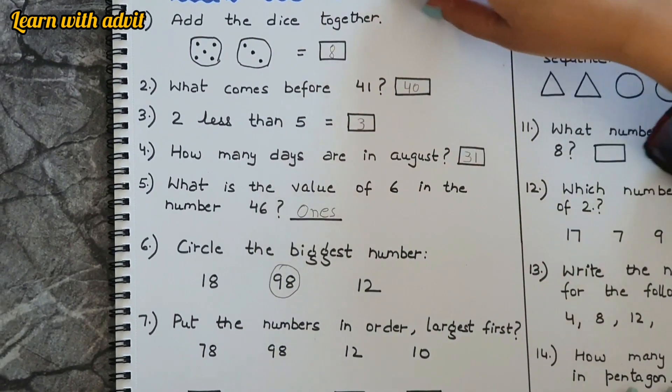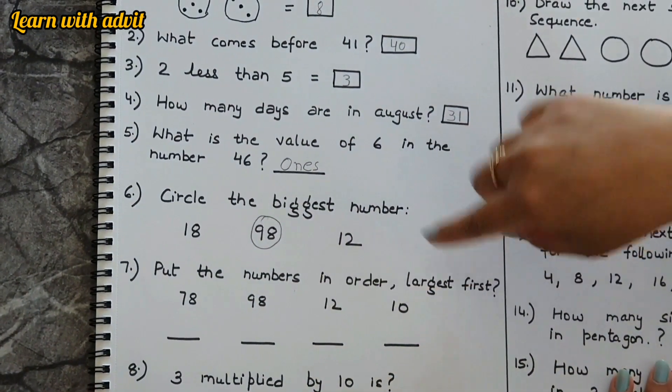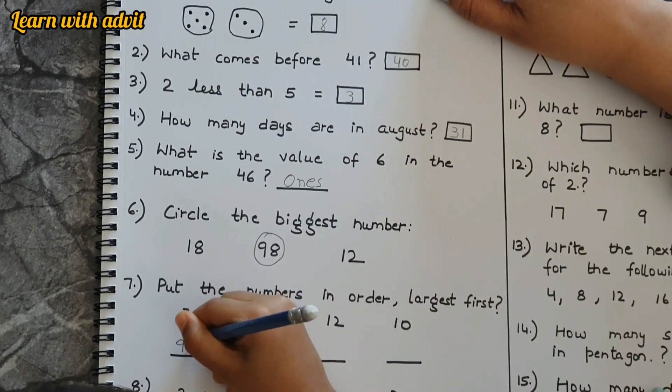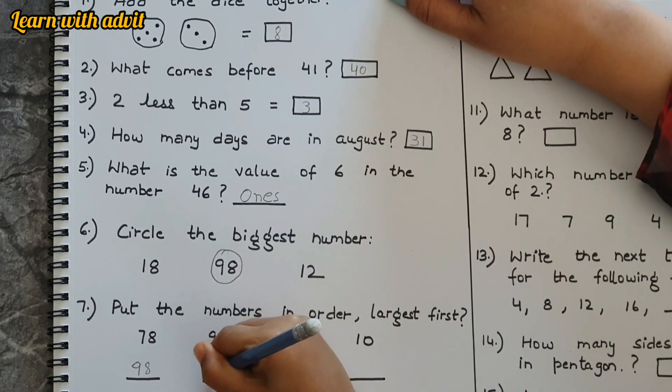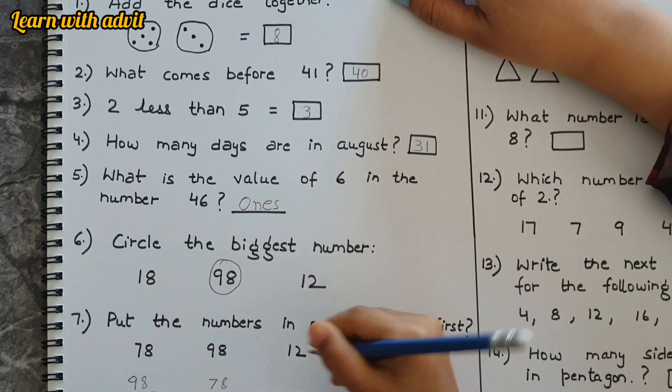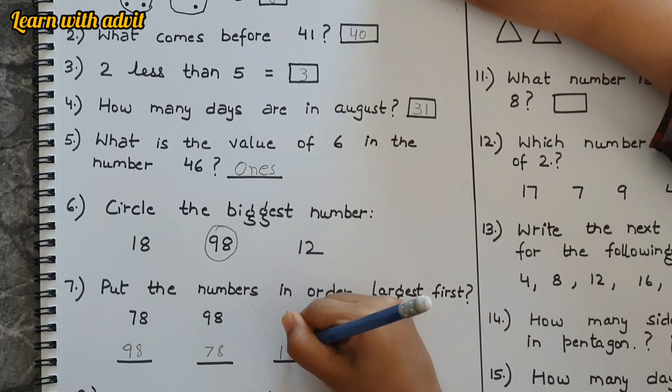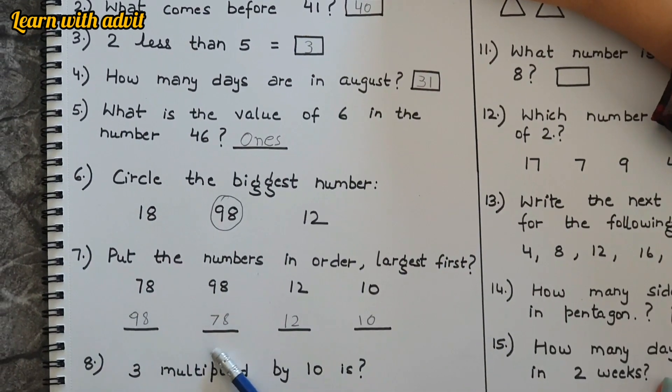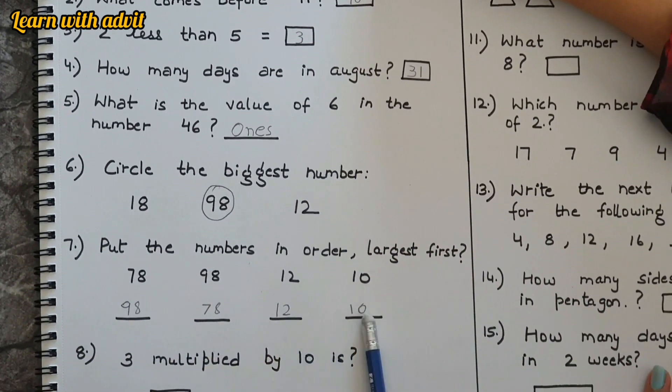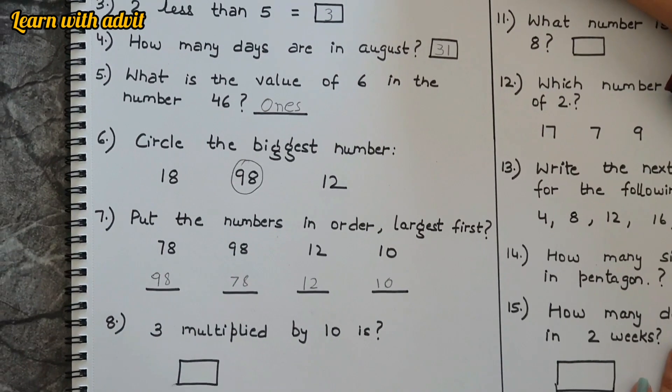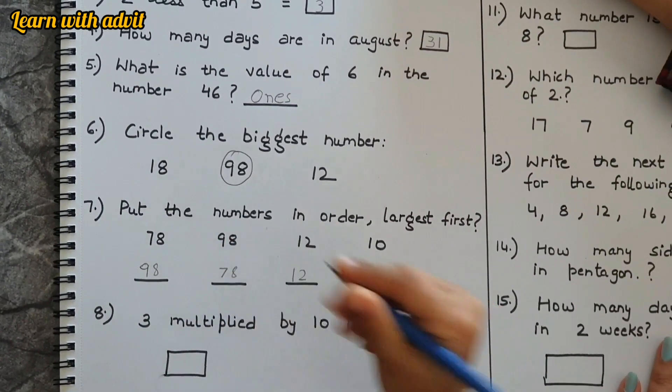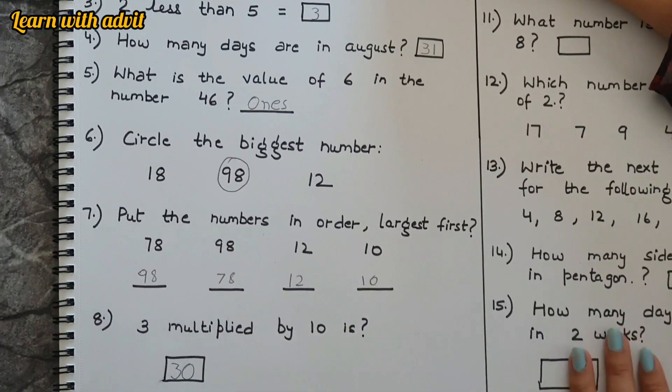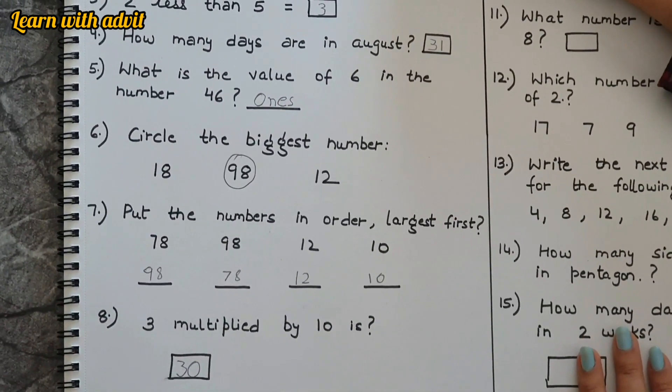Put the numbers in order, largest first. 98, 78, 12, and 10. Three multiplied by 10 is 30, and two multiplied by 10 is 20. Very good.